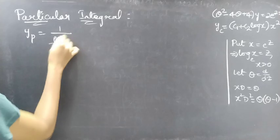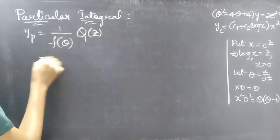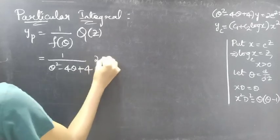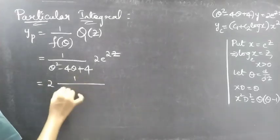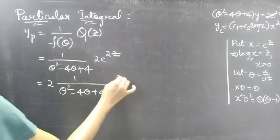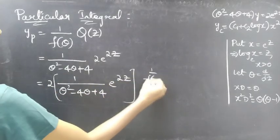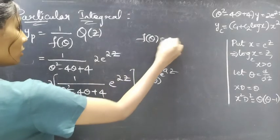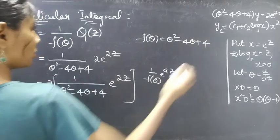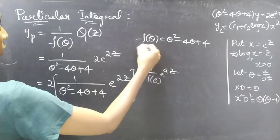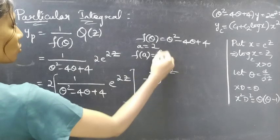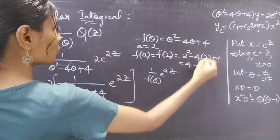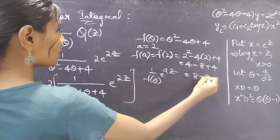Now let's find yp. yp equals 1/f(theta) · Q(z), where f(theta) equals theta² minus 4theta plus 4 and Q(z) equals 2e^(2z). We write this as 2 times 1/(theta² − 4theta + 4) · e^(2z). This is of the form 1/f(theta) · e^(az). Comparing e^(2z) with e^(az), a equals 2. Finding f(a): f(2) = 2² − 4·2 + 4 = 4 − 8 + 4 = 0.